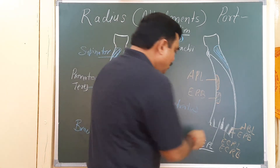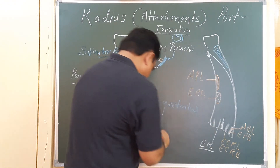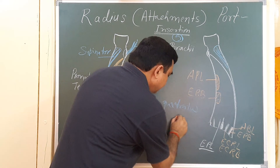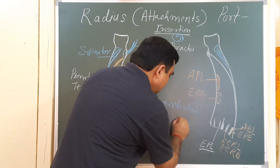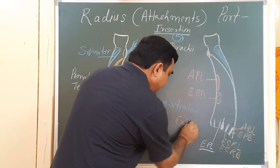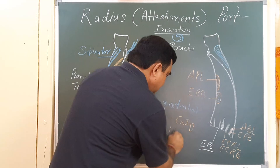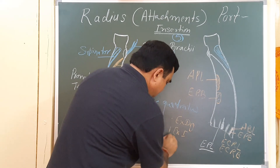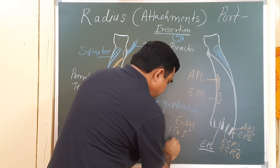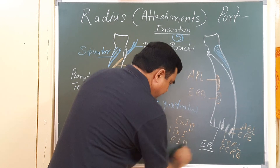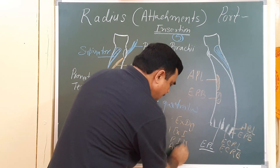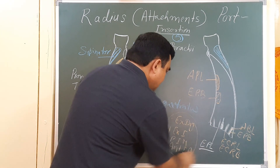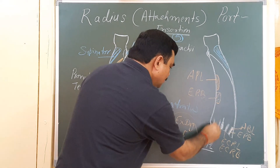In the fourth compartment, extensor digitorum, extensor indicis, posterior interosseous nerve, and anterior interosseous artery pass. So these four structures pass through this compartment.